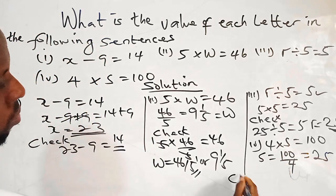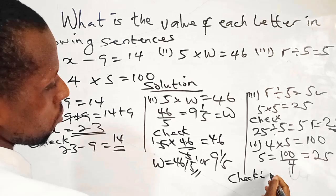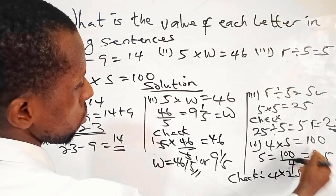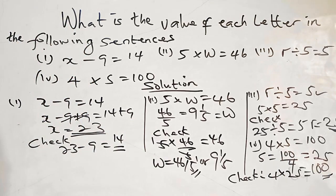Okay, by the time we say check, we have 4 times S is 25. That gives us 100. Thank you very much.